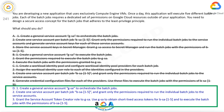The correct answer is D. Create a general service account GSA to orchestrate the batch jobs. Create one service account per batch job BSA-1 through BSA-5 and grant only the permissions required to run the individual batch jobs to the service accounts. Grant the service account token creator role to GSA.